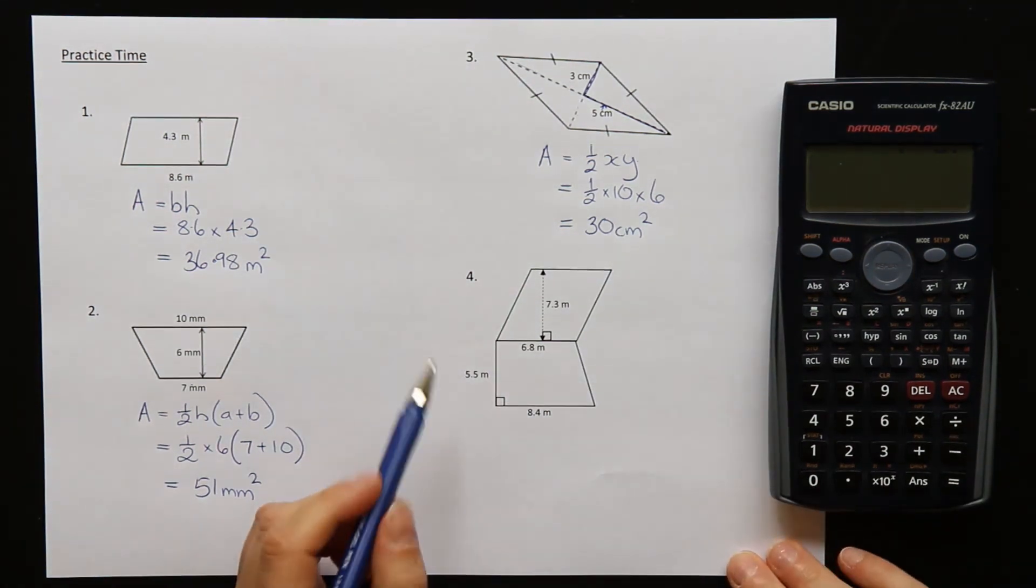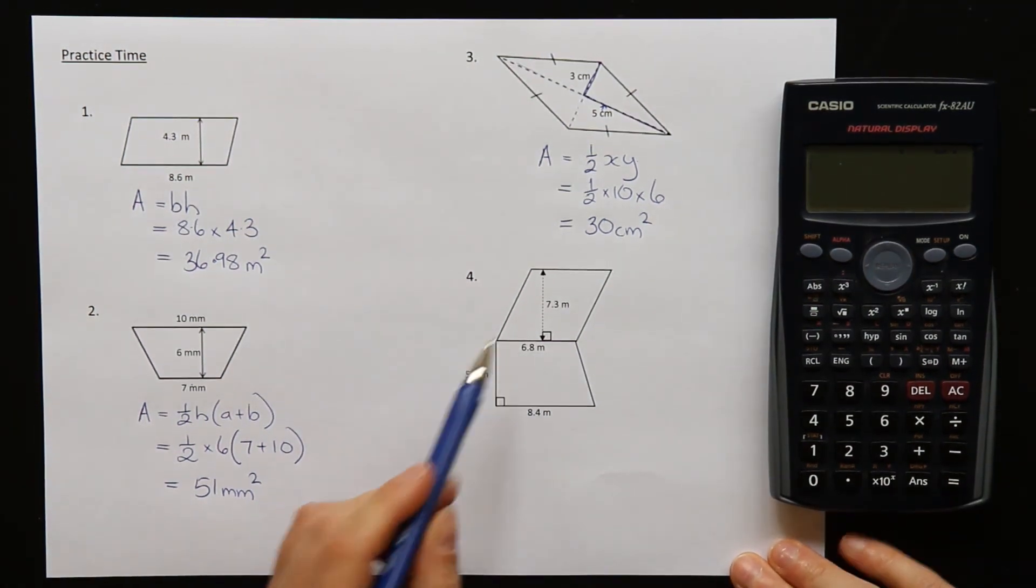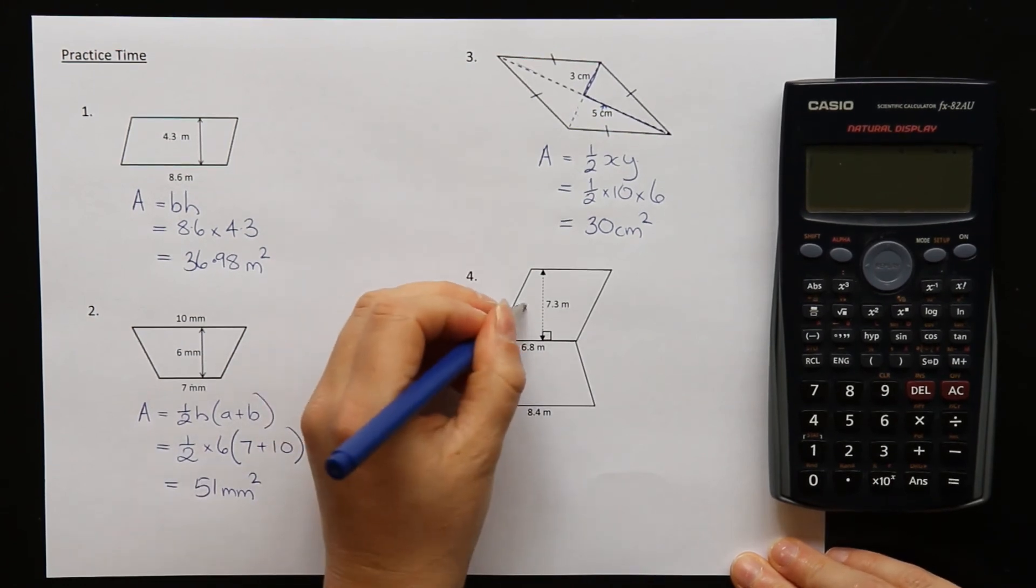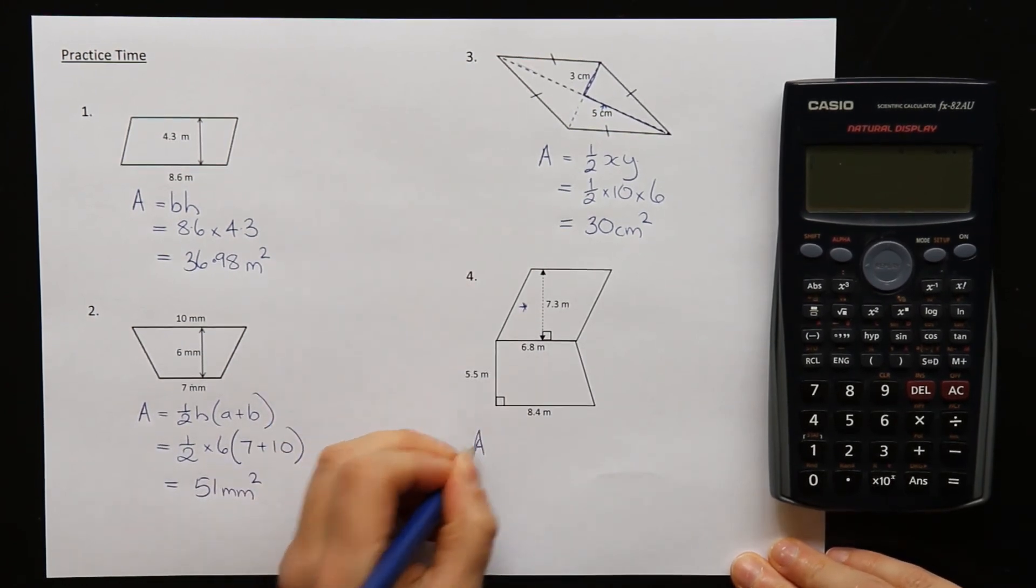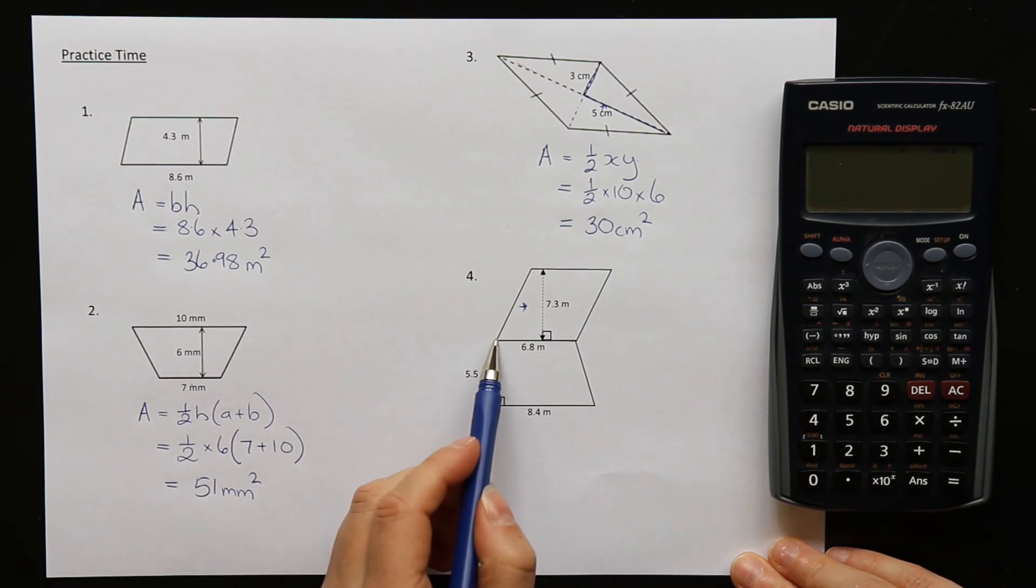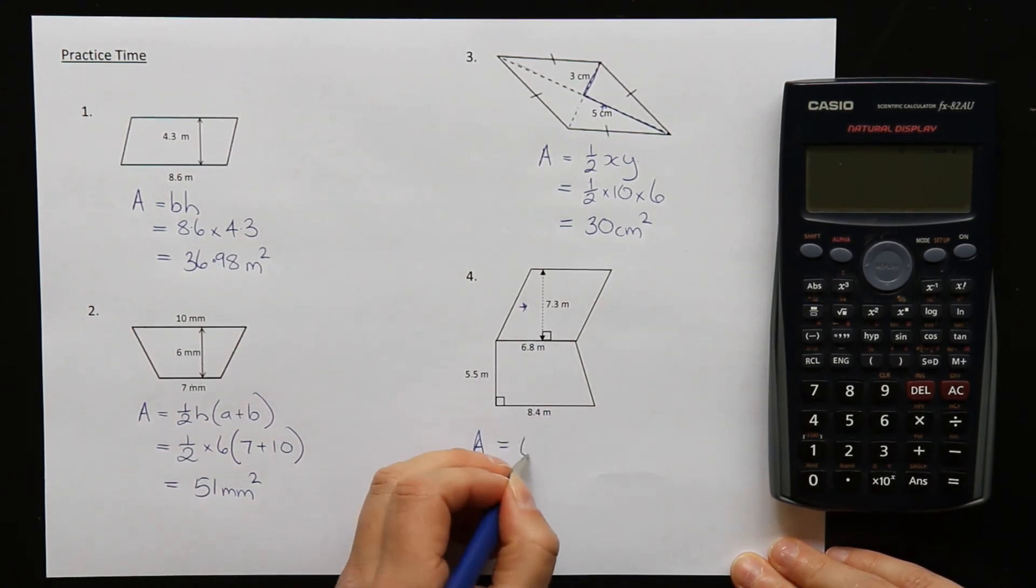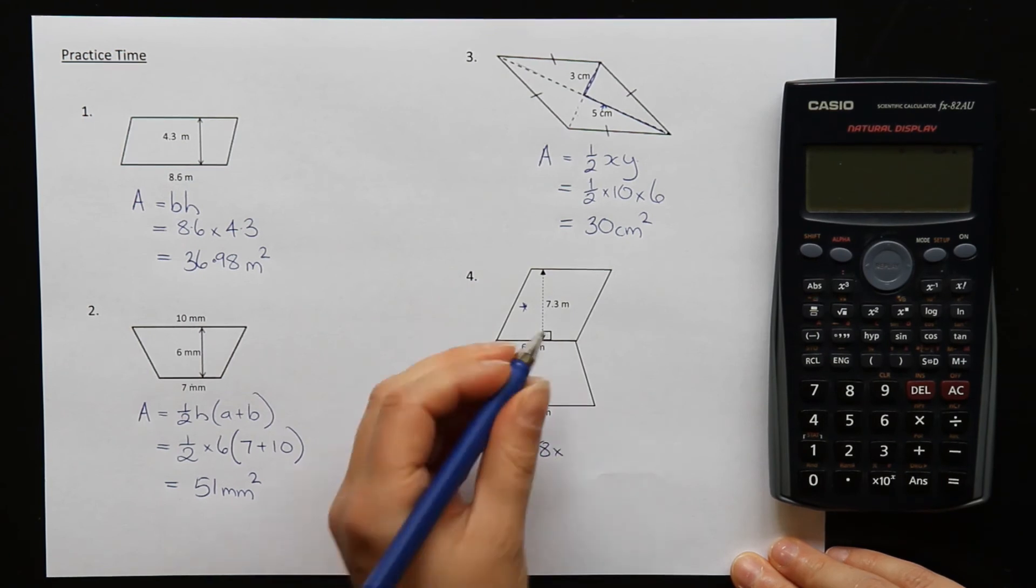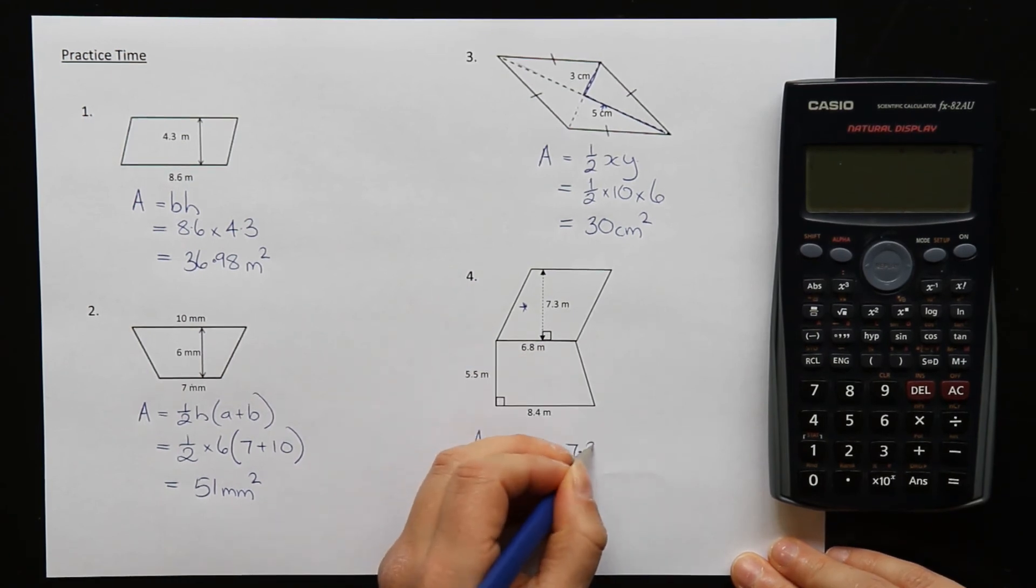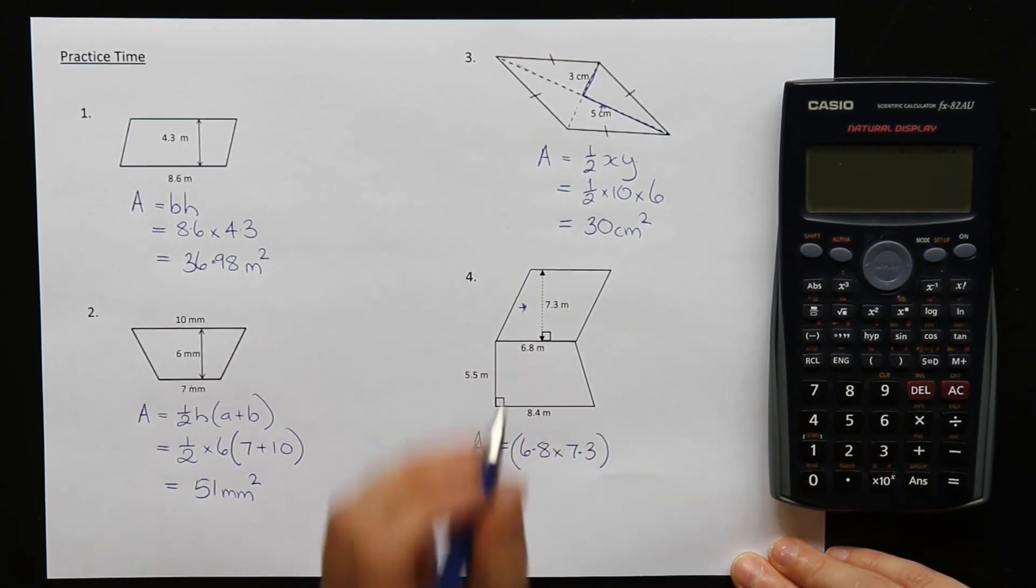Okay, and finally question four. We have two shapes joined together here. Let's start with this one here on the top. It is a parallelogram. We have a base and a height. So base is 6.8 times the height which is 7.3. Okay, that's the parallelogram done.